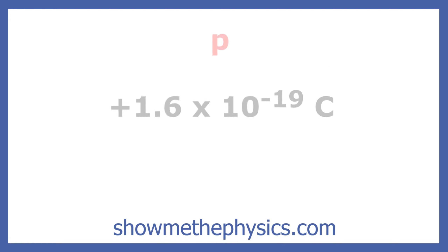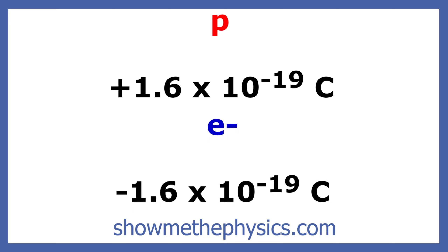The smallest possible positive charge is the charge on the proton, which is positive 1.6 times 10 to the negative 19th coulombs. The smallest possible negative charge is the charge on an electron, and that is negative 1.6 times 10 to the negative 19th coulombs.